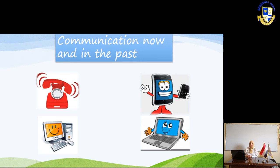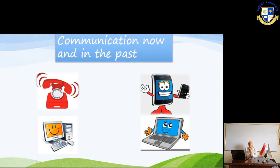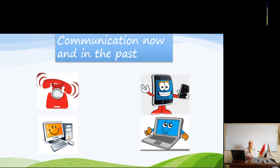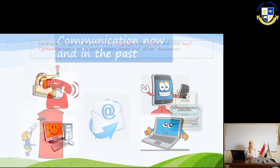You can see four devices: a telephone, a cell phone, a computer, and a laptop. In the past we used a telephone before we had cell phones, and we used a desktop computer before we used laptops.